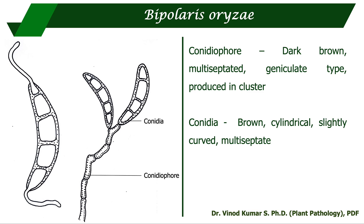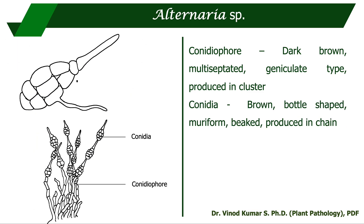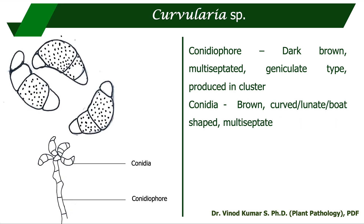Bipolaris oryzae causes rice brown spot. The conidiophore is dark brown, multiseptate, geniculate, and produced in clusters. The conidia are brown, cylindrical, slightly curved, and multiseptate. Alternaria species cause blight diseases in many agricultural and horticultural crops. Similarly, the conidiophore is dark brown, multiseptate, geniculate, and produced in clusters. The conidia are brown, bottle-shaped, muriform — meaning they have both horizontal and vertical septation like bricks — beaked, and produced in chains.